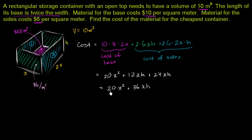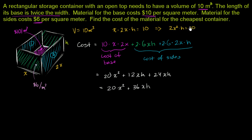We're not ready to optimize yet — we need to express h as a function of x. We know the volume must be 10 cubic meters: x times 2x times h equals 10, so 2x²h equals 10. Dividing both sides by 2x² gives h equals 10 over 2x squared, or h equals 5 over x squared.